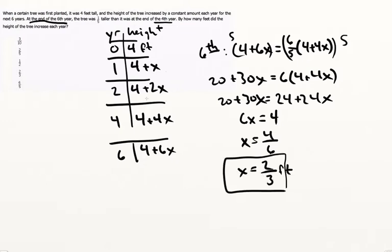The amount we're looking for is the height that the tree increased each year, which is of course our x, and our x we find is two-thirds of a foot. So the answer is D.